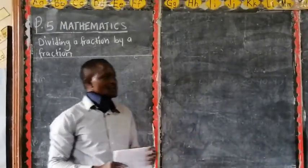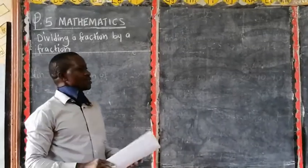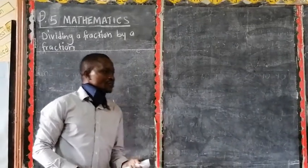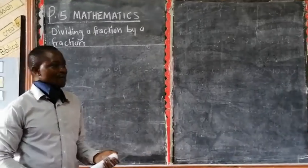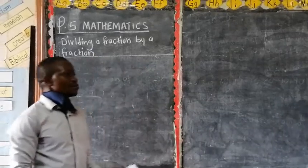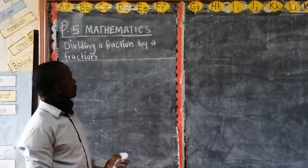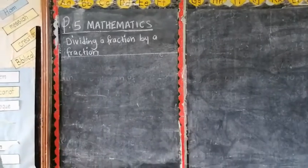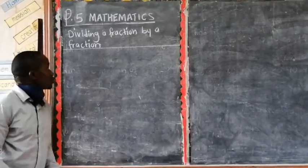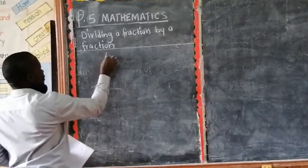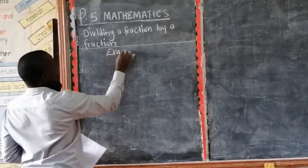So now, last time we stopped at the subject called division of a fraction by a whole number. We are reading from where we stopped. So today we are looking at the division of a fraction by a fraction. Let's start with the first example.